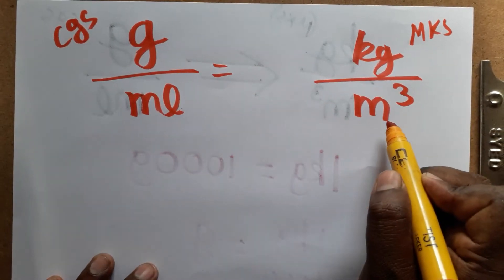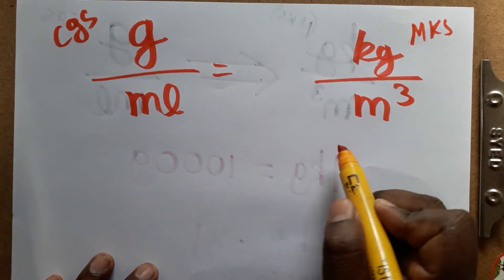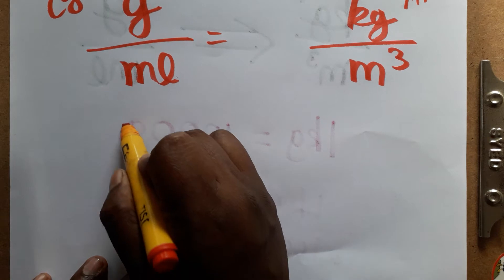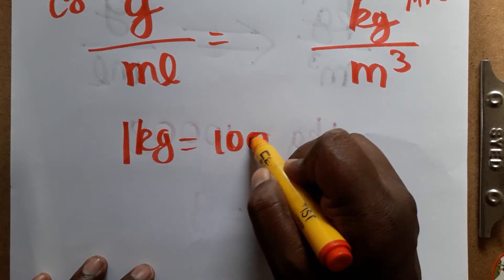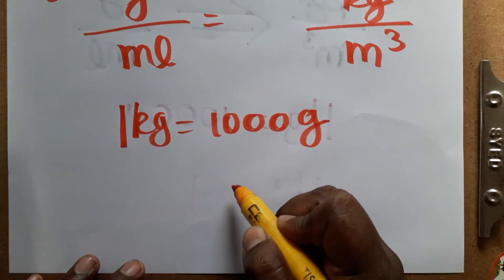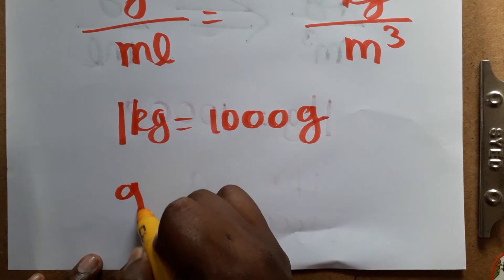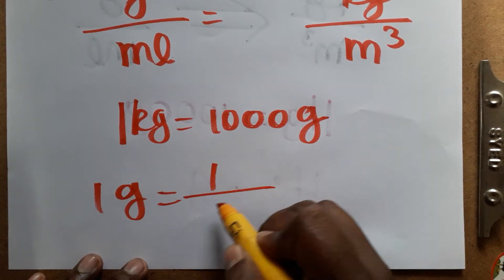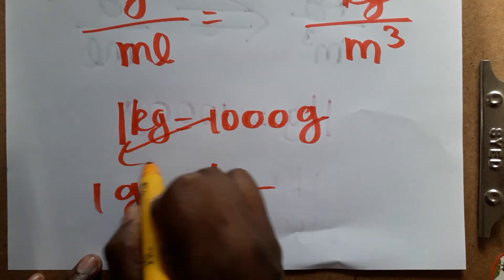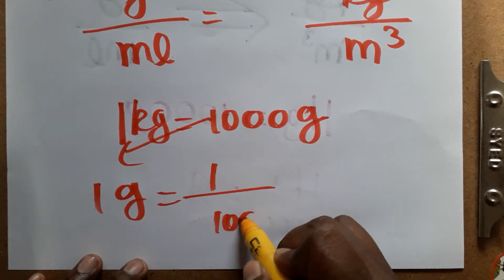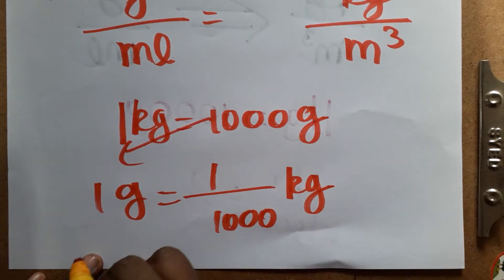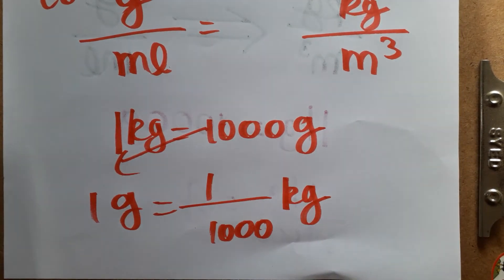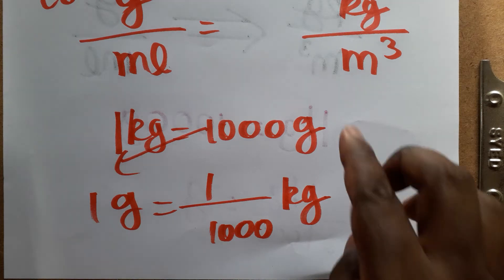First, gram to kilogram. We know 1 kg is equal to 1000 grams, so 1 gram is equal to 1 divided by 1000 kg. That is the gram to kilogram conversion: 1/1000 kg.